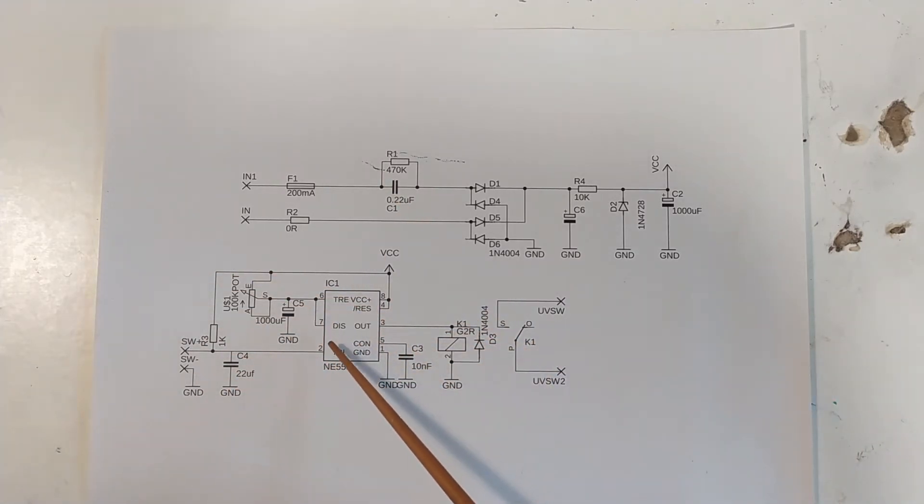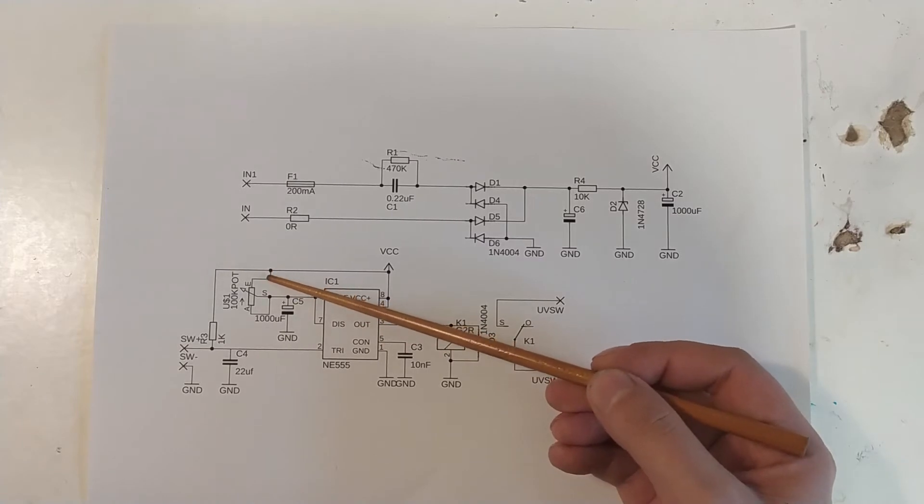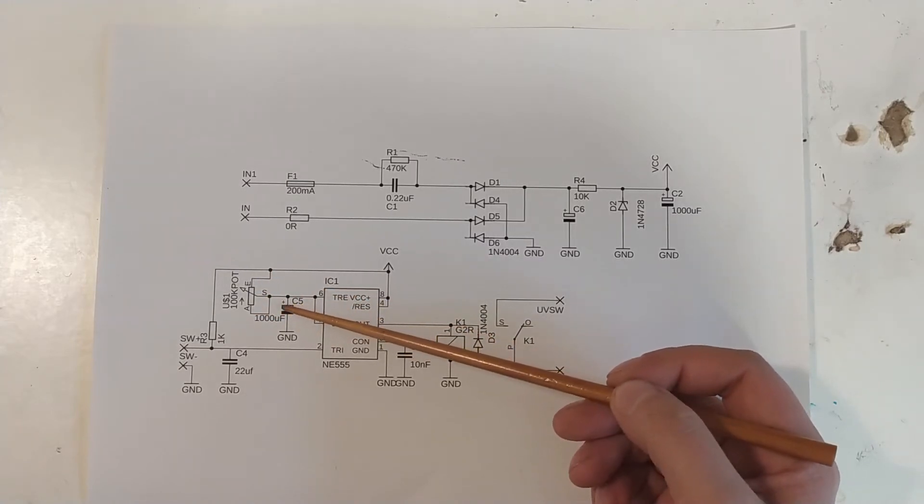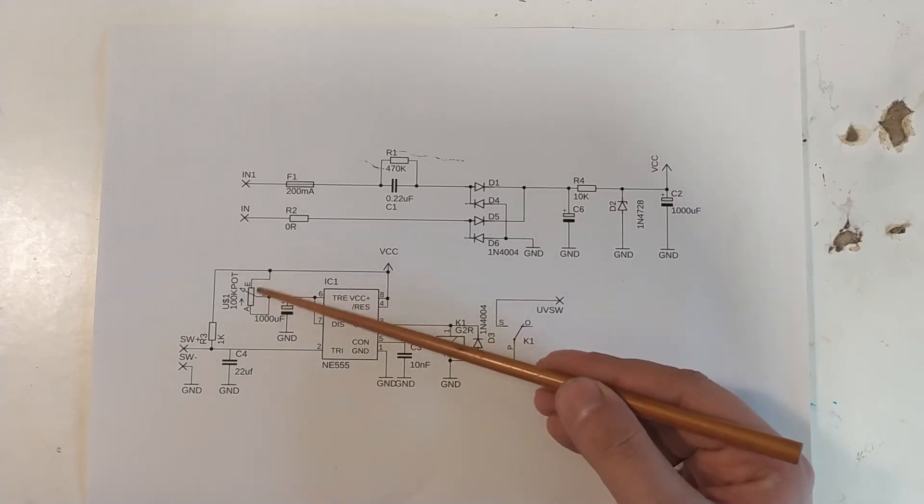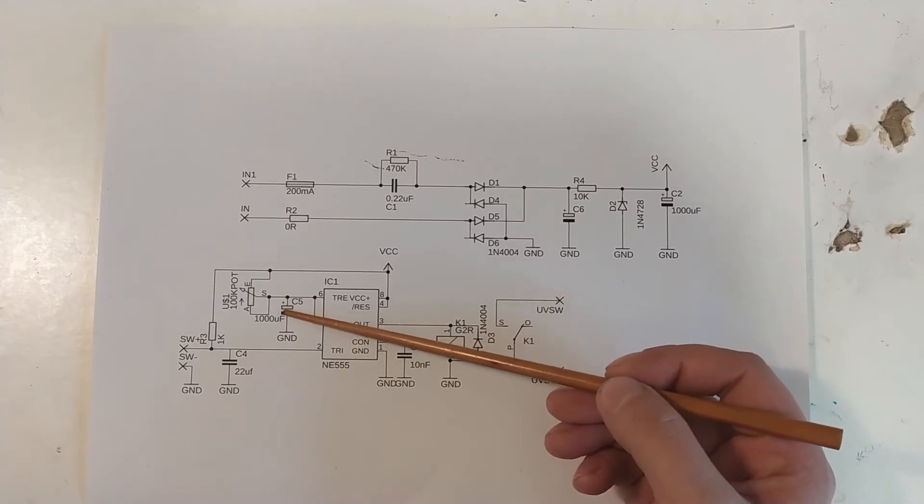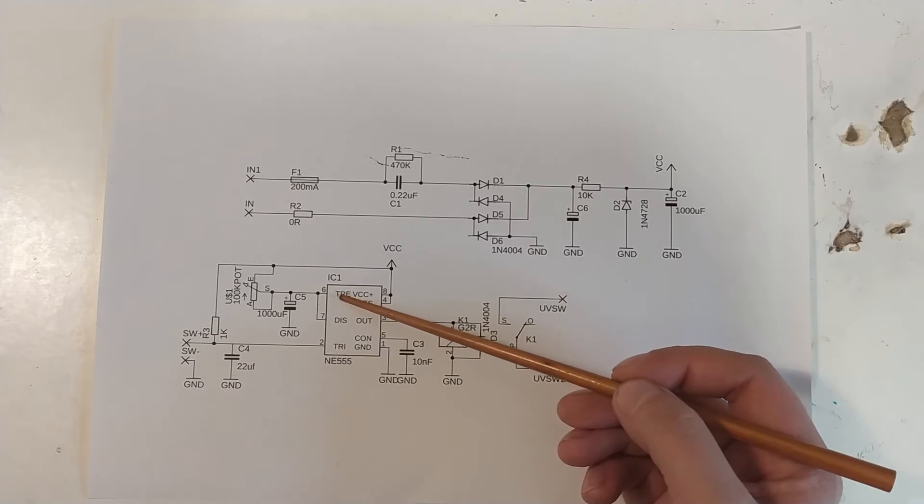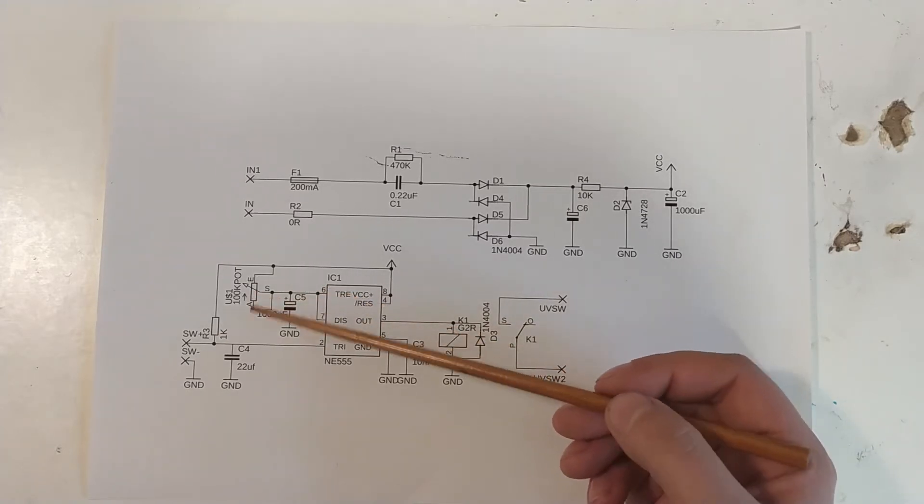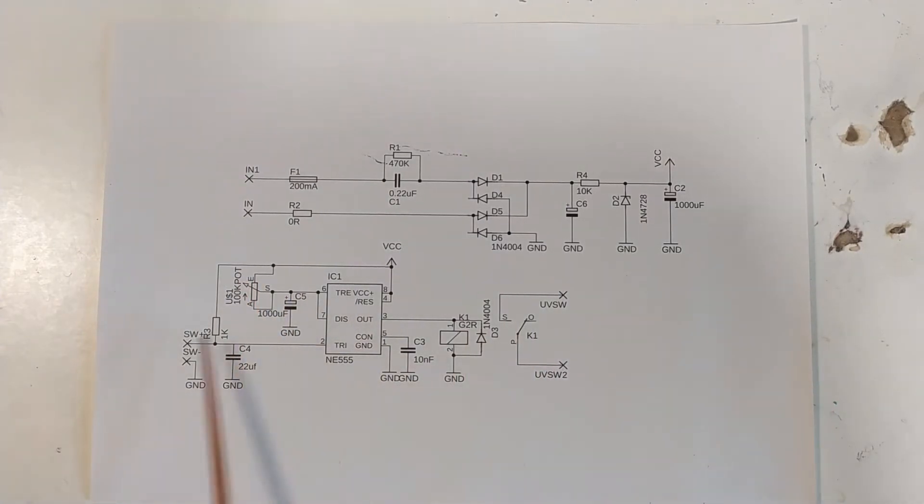You ground this point out to ground, and then it will activate this relay for a certain amount of time before switching it off again. The time can be adjusted by this potentiometer here. And what this adjusts is the charging current for this capacitor here. And what we get is different charging times. So when this capacitor is discharged through here, we have different times until it passes the threshold here. And that gives us different timing that we can adjust with this. So this is all fairly straightforward.